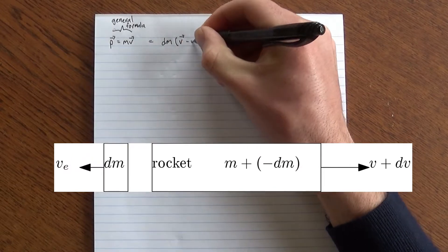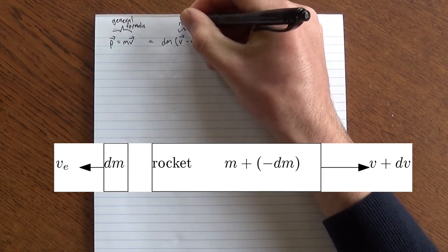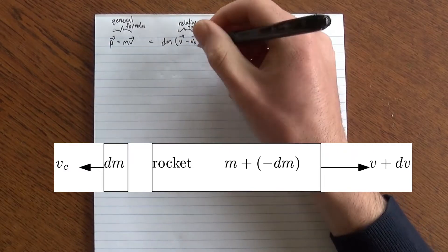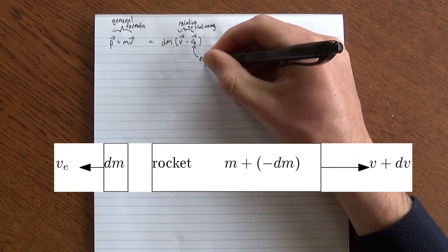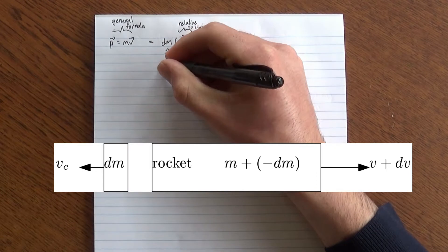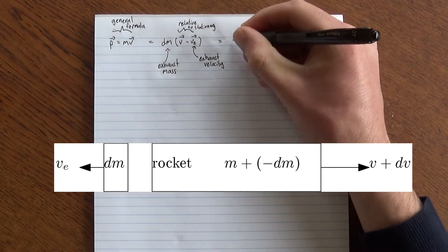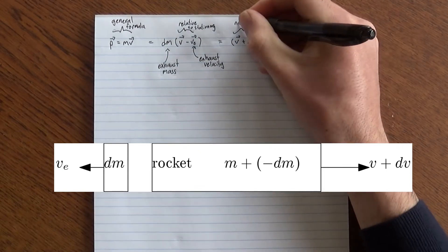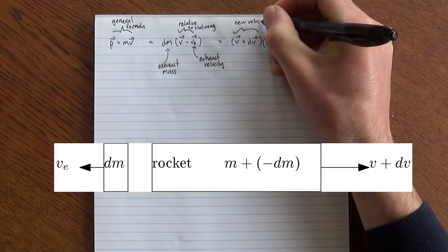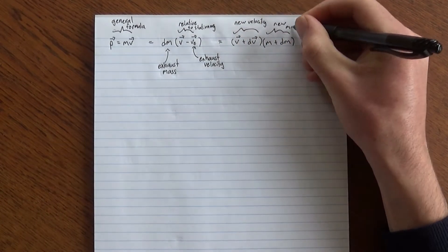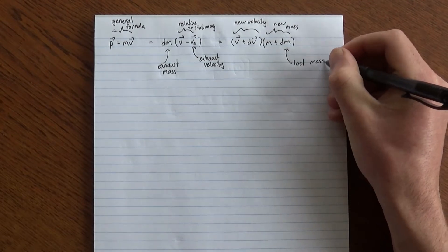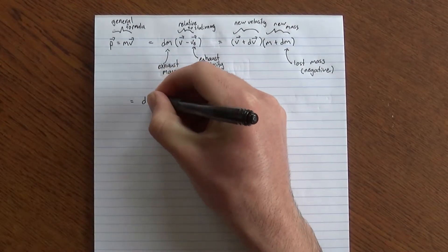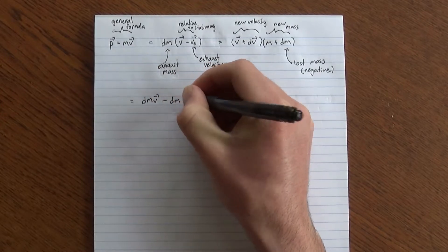Let's start with a rocket of mass m travelling at velocity v. At every point in time t plus dt, it ejects some mass dm at an exhaust velocity ve, thus gaining a new velocity v plus dv. Let's look at the momentum equation. Note that dm is negative, and I am using v minus ve, such that we get the velocity relative to a stationary observer.